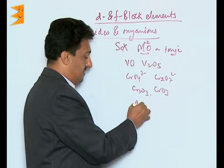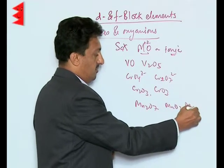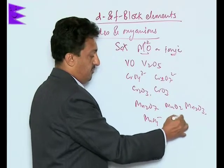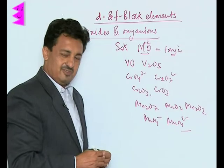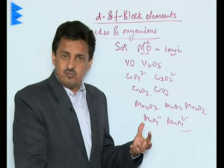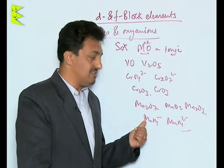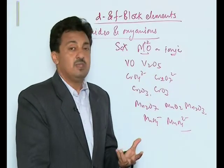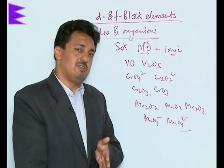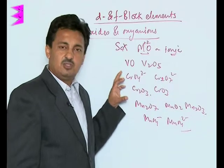Similarly, manganese forms Mn₂O₇, MnO₂, Mn₂O₃, MnO₄⁻, and MnO₄²⁻. Oxides and oxyanions in which the transition element is in its highest oxidation state are covalent and acidic, while those in lower oxidation states are ionic and basic, since they can be oxidized to higher states and reduced back from the highest oxidation state.